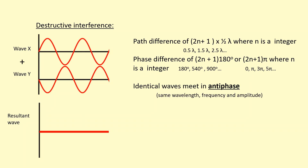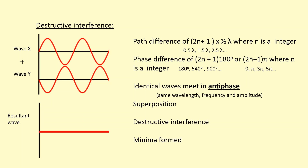The waves are identical again, meaning the same wavelength and same frequency. When they meet and superpose, they cancel out, giving destructive interference and a minimum is formed. For example, if this was light and these two light waves were meeting in antiphase, they would cancel out and you would see nothing — you would see darkness.